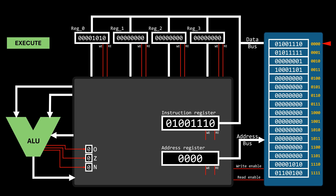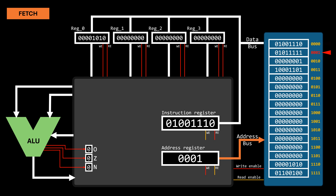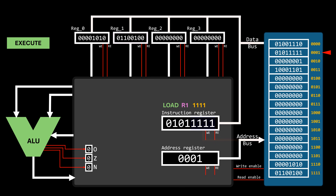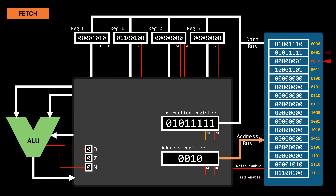After executing the instruction, the internal circuitry of the control unit increments the value of the address register. In our architecture, the value is increased by 1 because each instruction is 1 byte long. Modern architectures have thousands of possible instructions, so instructions are much larger and the increment value can vary. This increment ensures that when the CPU goes back to the fetch step, the address register points to the next instruction of the program. The cycle then repeats — the instruction is loaded into the instruction register, decoded, and executed. In this case, copying the value in memory location 15 into register 1.